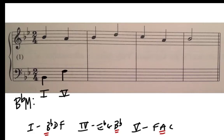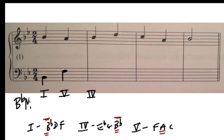Next we have a B♭. That could be a return to tonic, or it could be subdominant, since B♭ is in both the tonic and the subdominant. The reason we're not going to go with subdominant is that subdominant following the dominant is called a retrogression in root position — it's to be avoided. It's actually used a lot in popular and folk music, but we're going to avoid it as Baroque composers did. So we're going to use the tonic again, returning to B♭ in the bass.